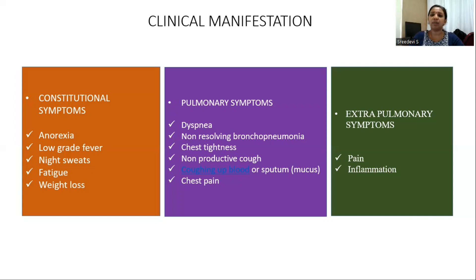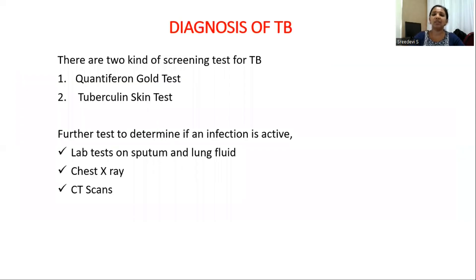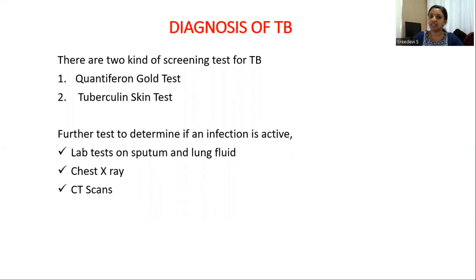Extra-pulmonary symptoms include pain and inflammation. Coming to the diagnosis of TB — for TB, we have two screening tests available: the QuantiFERON Gold Test and the Tuberculin Skin Test. For further tests, we have a lung lab test and a CT scan.